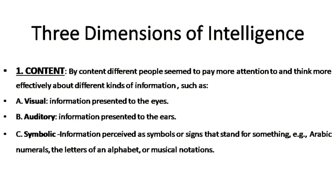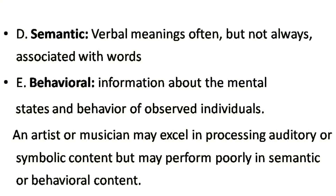The first dimension is content. Different people pay more attention to and think more effectively about different kinds of information. Content can be visual (information presented to the eyes), auditory (information presented to the ears), symbolic (information perceived as symbols or signs that stand for something, such as Arabic numerals, letters of an alphabet, or musical notations), semantic (verbal meanings that often, but not always, associate with words), and behavioral (information about the mental states and behavior of observed individuals).